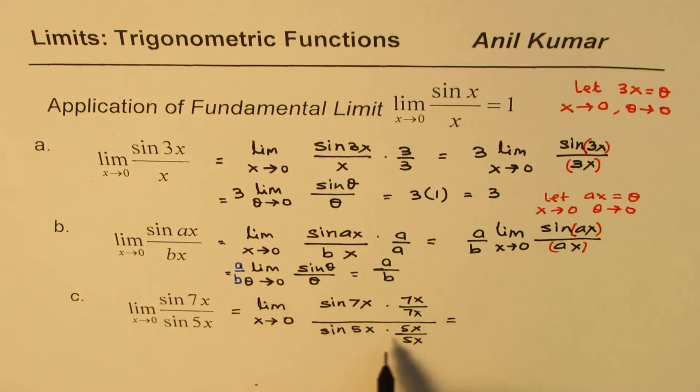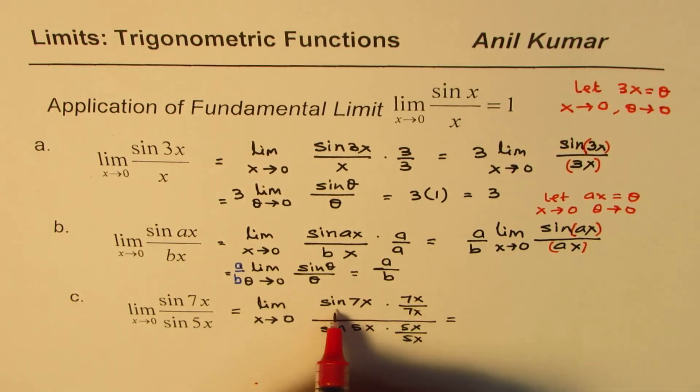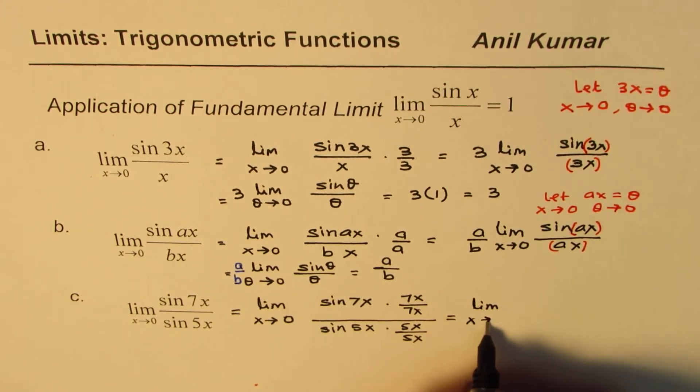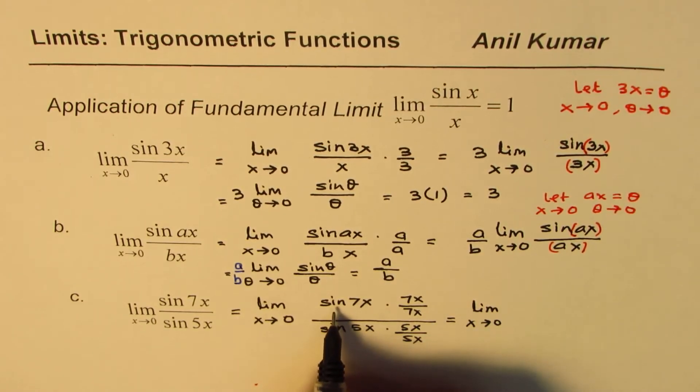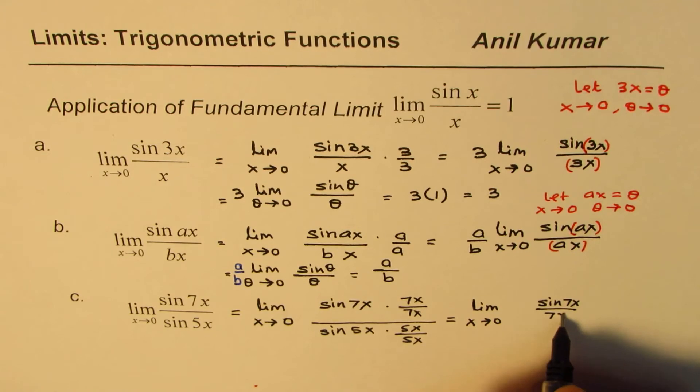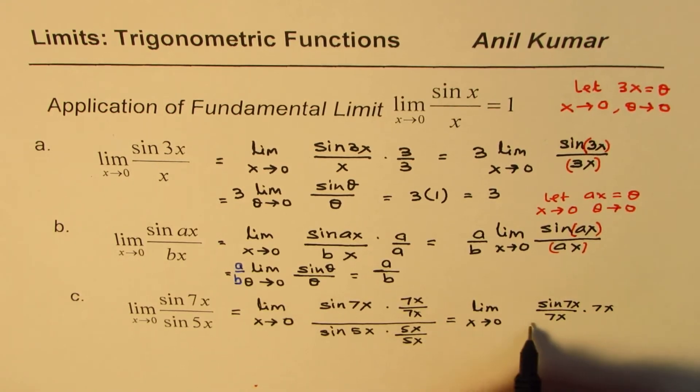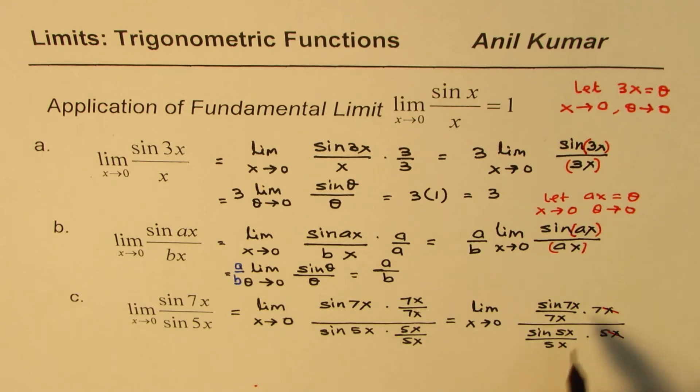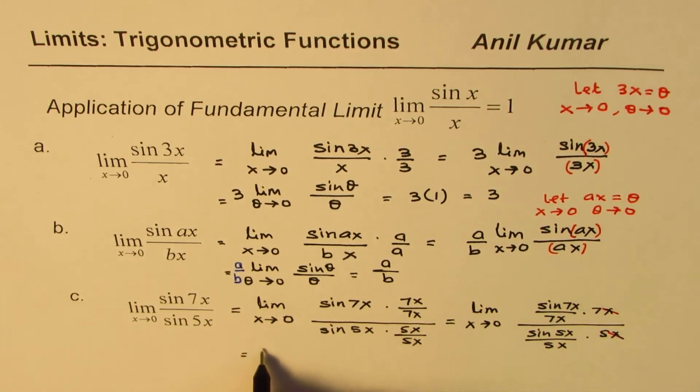Now, what can I do? Here, we'll utilize this 7x as the denominator. This 5x as the denominator here. We'll do it in two steps. So let me rewrite this as limit x approaches 0. So we can write this as sine 7x over 7x. And what we have here is 7x over limit sine 5x over 5x. And we have here 5x. So as you can clearly see, that x and x cancel. So we are left with 7 over 5.